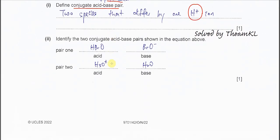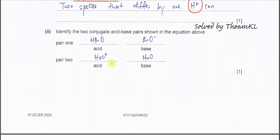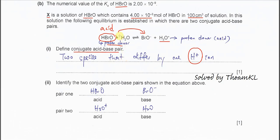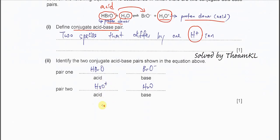Part 2: identify two conjugate acid-base pairs in the equation. The first pair is HBrO and BrO⁻. The second pair: H₂O on the left-hand side is the proton acceptor, so it is the base, and the hydronium ion H₃O⁺ is the one that donates a proton, so it is the acid. Therefore the second conjugate acid-base pair is H₃O⁺ (acid) and H₂O (base).